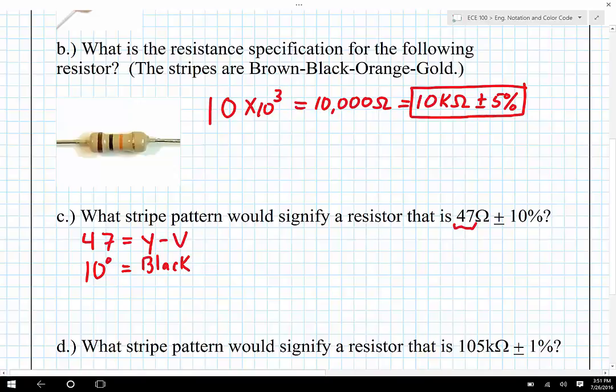And in this case, it's not plus or minus 5%, it's plus or minus 10%. And the plus or minus 10% will give you a pattern, a stripe that is silver.